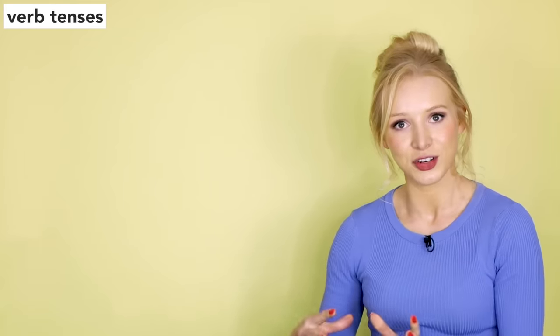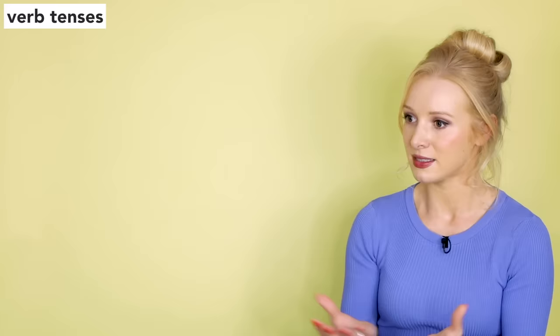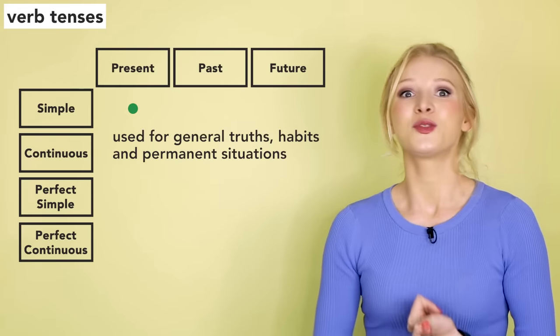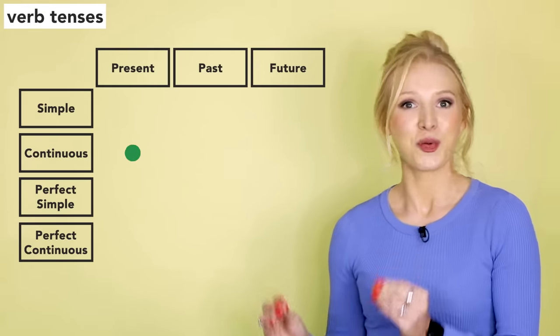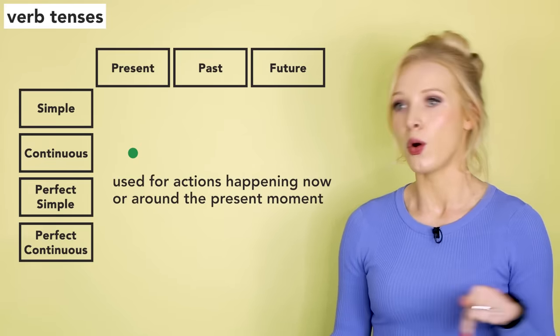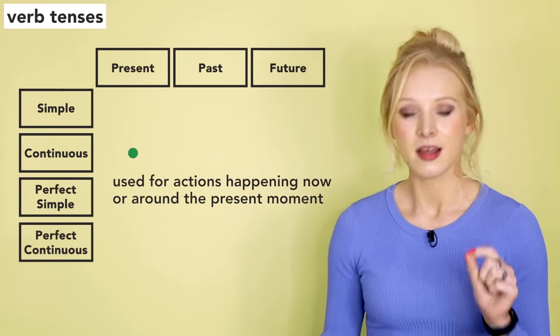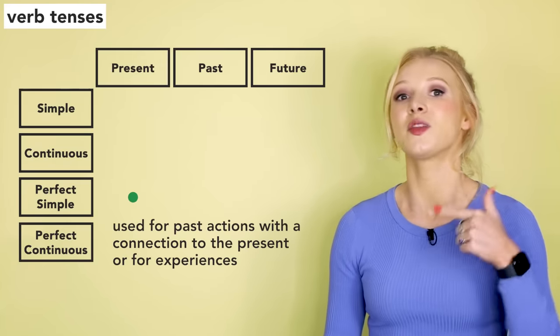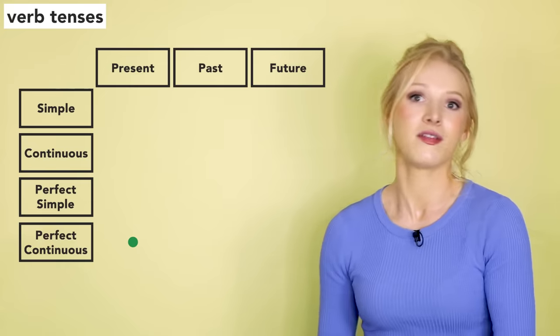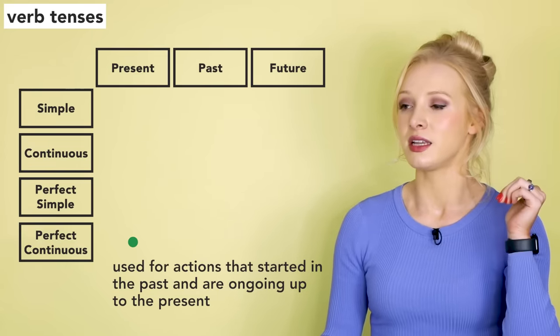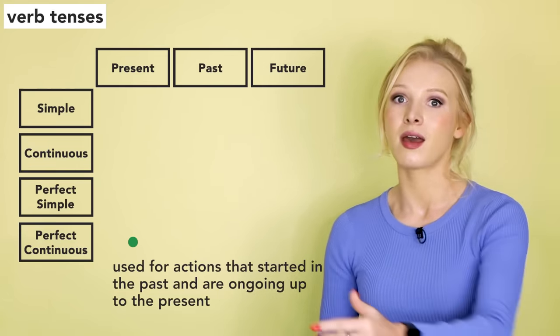Some people like to include the conditionals in the tenses, but I don't. You will hear some people say there are 16 tenses — I like to set the conditionals apart. Let's have a look at each one really quickly just to refresh our memories. The present simple is used for general truths, habits and permanent situations. The present continuous is used for actions happening now or around the present moment. The present perfect is used for past actions with a connection to the present or for experiences. And the present perfect continuous is used for actions that started in the past and are ongoing up to the present.